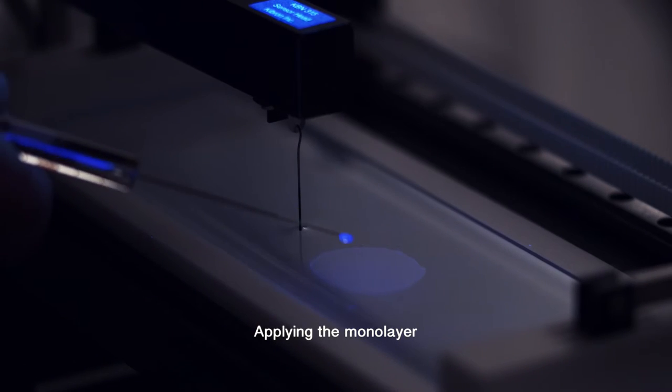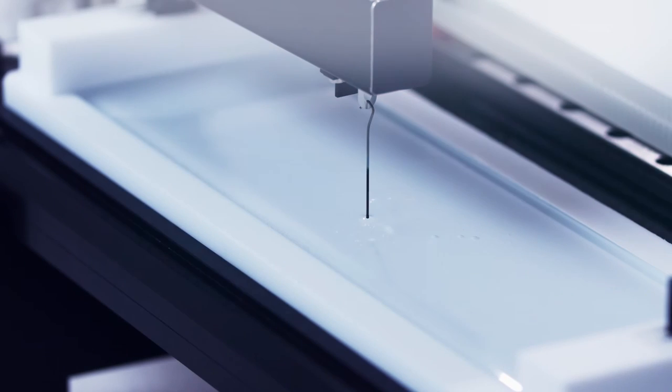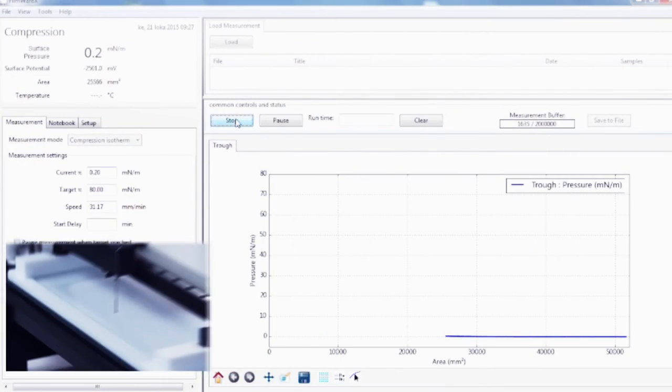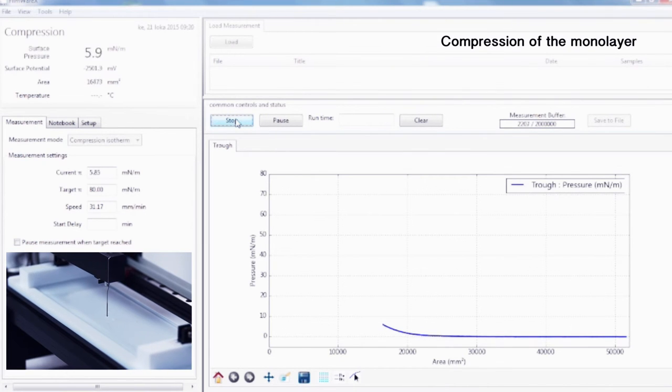In a typical experiment, the sub-phase is placed in the Langmuir trough and a known amount of substance is spread on top of the sub-phase using a volatile solvent in a drop-wise manner.